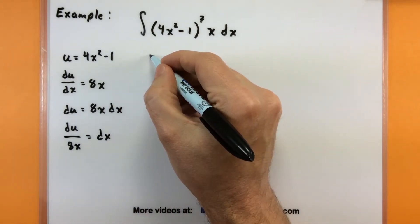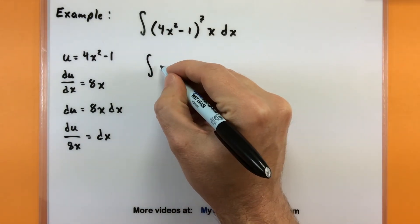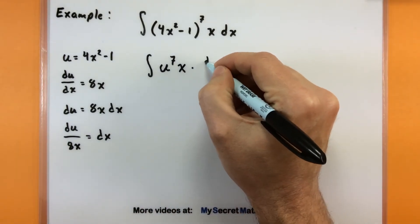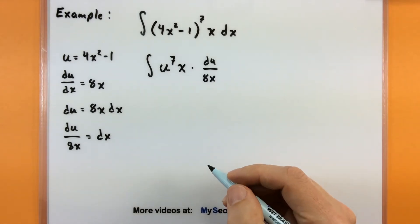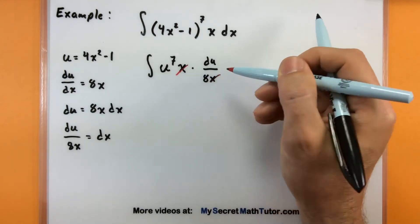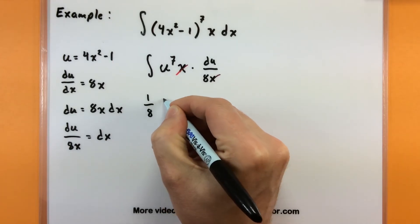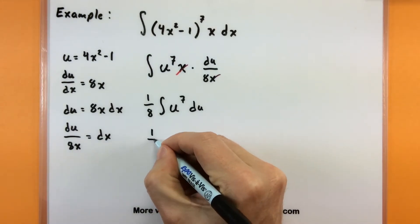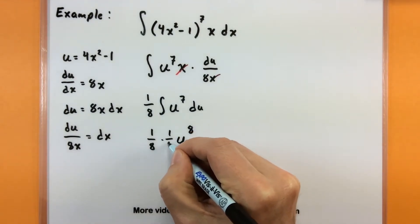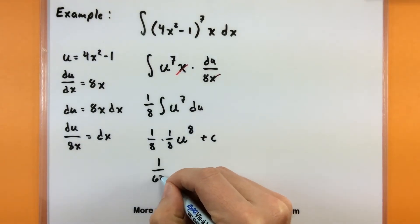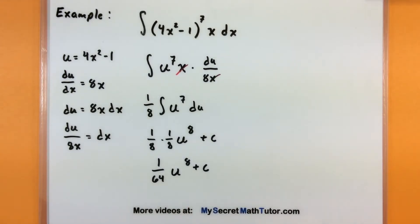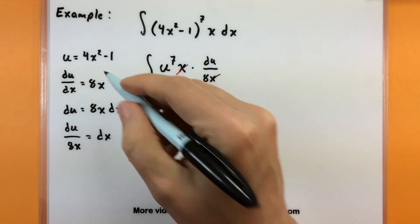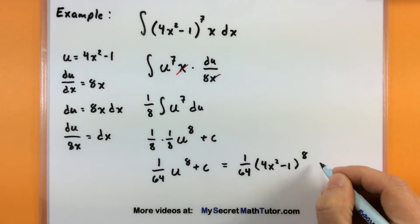Now we run back to the integral and put in these pieces. The 4x squared minus 1 comes from u, so this will be u to the 7th. The dx is replaced with du over 8x. The x's cancel, and the 8 in the bottom is a constant — move it out front as one-eighth. Here's our much simpler integral: one-eighth times the integral of u to the 7th du. We take the antiderivative by adding 1 to the power and dividing by the new power, giving us 1 over 64 times u to the 8th plus constant. Always return to the original variable — replace u with 4x squared minus 1. Done.